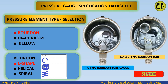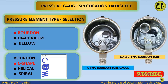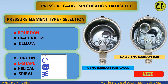Pressure element type selection. Options are Bourdon, diaphragm, and bellows. Within the Bourdon type, sub-options are C-shape, helical, and spiral. We select Bourdon type with C-shape for this application.